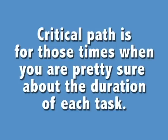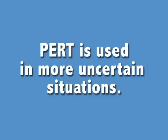Critical Path is more or less for when you're pretty sure about the durations — the time it's going to take to do each task or each activity — whereas PERT is used in a more uncertain situation. And you can use these three time estimates to come up with something called the expected time.